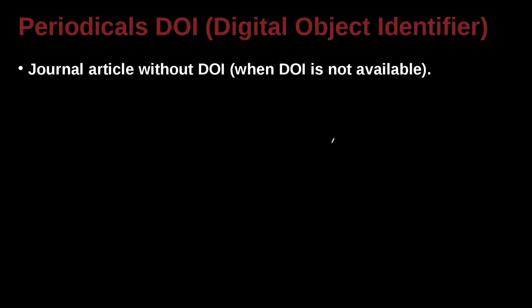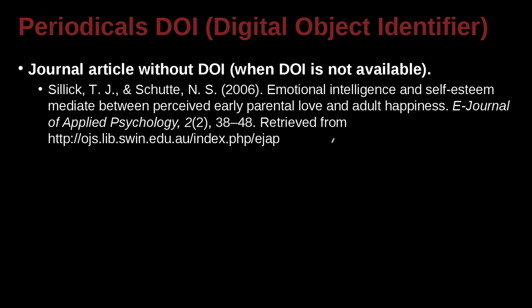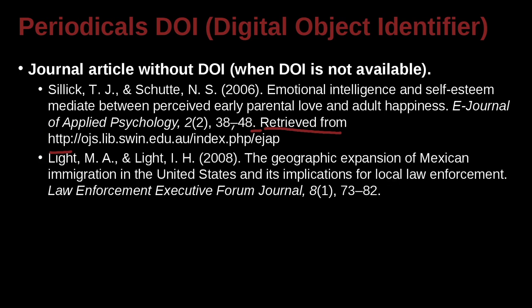The journal article without a DOI, for example, may look something like this. So here we go ahead and we put the HTTP at the end, after the period. And we specifically write the words 'Retrieved from,' and then we go ahead and give the address of the URL. Everything else would stay the same.